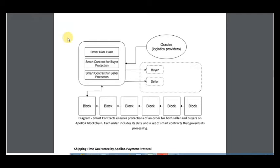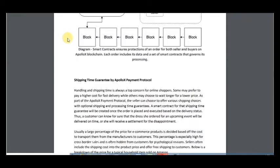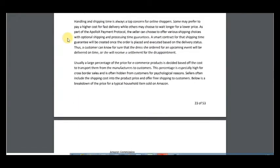The diagram shows smart contracts ensuring protection of an order for both sellers and buyers on the ApolloX blockchain. Each order includes its data and a set of smart contracts that governs its processing, with shipping time guaranteed by a pool experiment protocol.